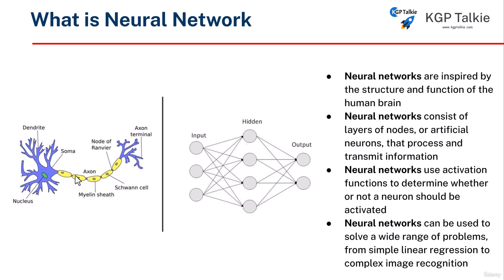This axon passes the signal from the nucleus to the axon terminal, and then this axon terminal passes the signal to the next neurons, which are connected via the axon and the dendrites.